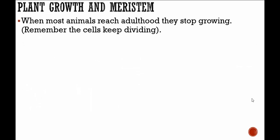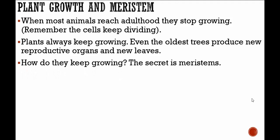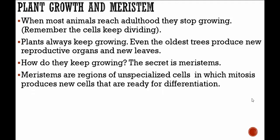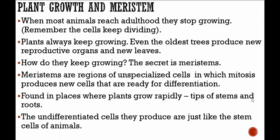When most animals reach adulthood, they stop growing, but plants always keep growing. Even the oldest trees produce new reproductive organs and new leaves all the time. The secret is in the meristems — regions of unspecialized cells in which mitosis produces new cells ready for differentiation. They're found at tips of stems and roots. The undifferentiated cells they produce are just like stem cells of animals, but in plants we call these meristems.